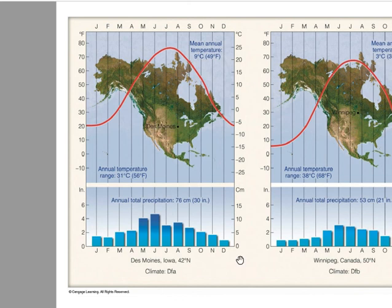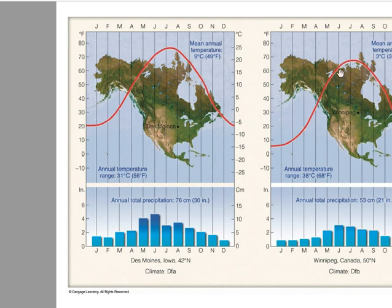Comparing Des Moines and Winnipeg on the climate graphs: they have just about the same amount of rainfall — fully humid — and both are mid-continental and inland. The difference is in scale: Des Moines ranges from about 20 degrees up to 80 degrees with hot summers and more mild winters, while Winnipeg ranges from near zero up to around 70 degrees — warm summers but not quite as hot, and colder winters.